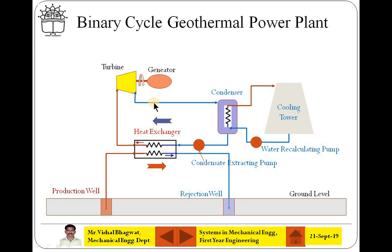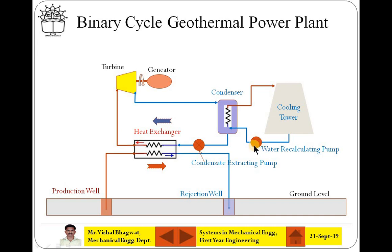Now, this low pressure steam is collected to the condenser. In the condenser, this steam is condensed and converted into liquid. Again, that low pressure organic liquid is pumped back to the heat exchanger with the help of condensate extraction pump. In the condenser, what is happening? The cool water from the base of the cooling tower is circulated with the help of recirculating pump and it is going inside the condenser coil.